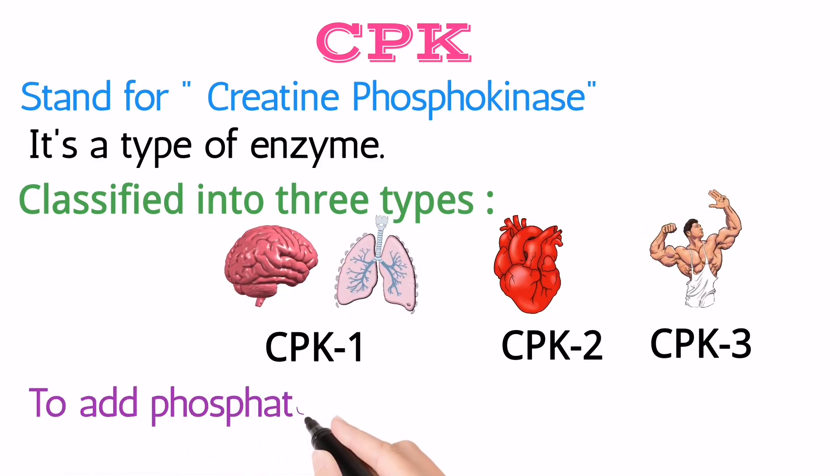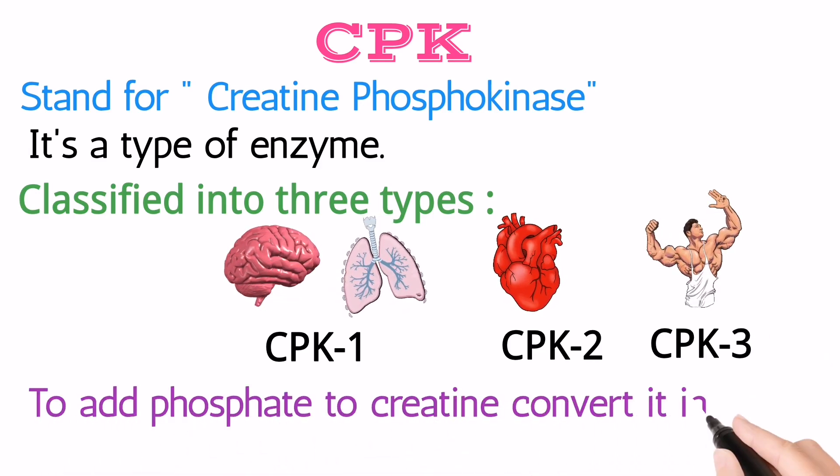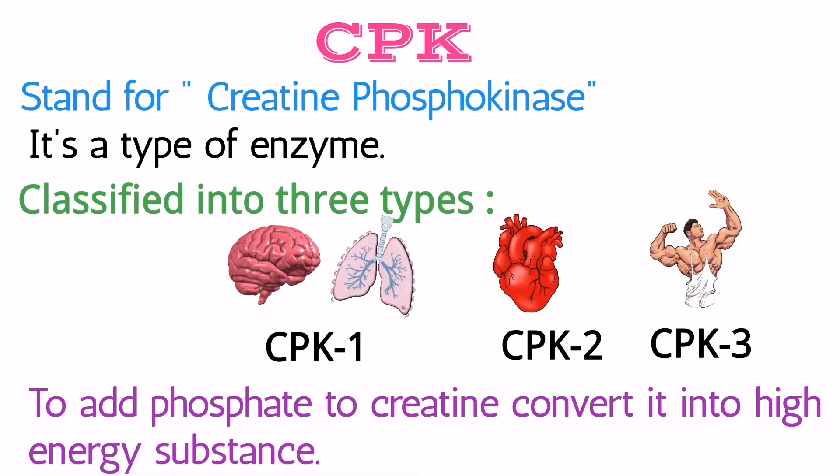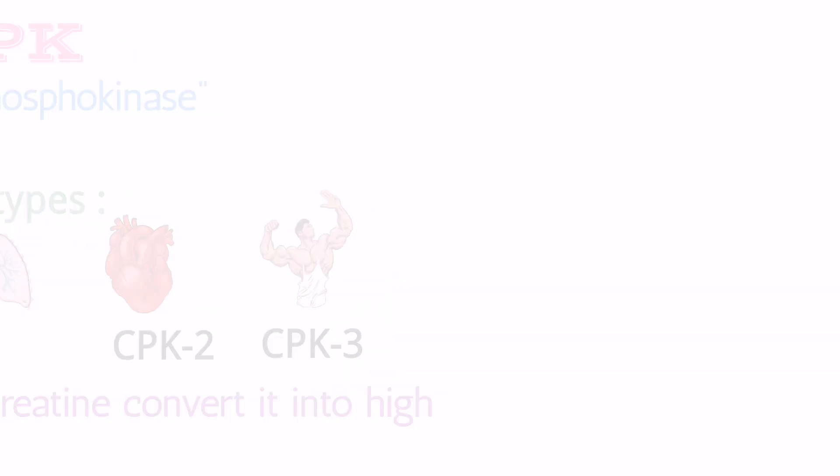The main function of the CPK enzyme is to convert Creatine into a high energy product by adding a phosphate group.